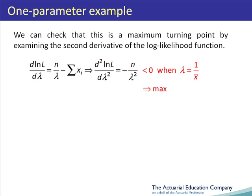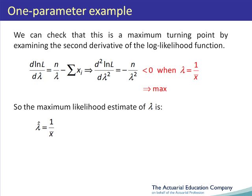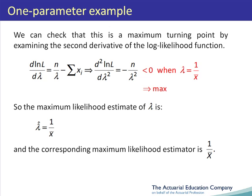In fact, the second derivative is negative for all values of lambda. So the maximum likelihood estimate of lambda, denoted lambda hat, is 1 over the sample mean x bar. The corresponding maximum likelihood estimator of lambda is the random variable 1 over capital X bar.